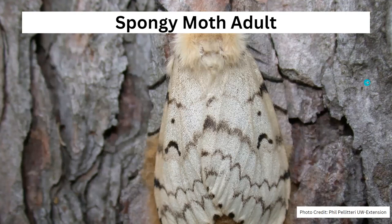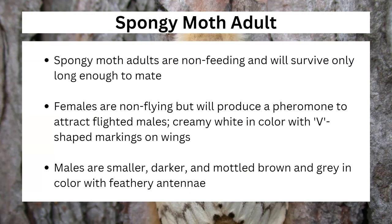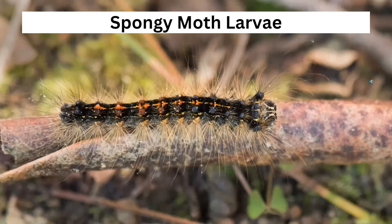What we're looking at now is a Spongy Moth adult. This can be a fairly drab moth, though the female you're looking at does have some markings that set it apart from other insects. The females and males are going to be sexually dimorphic — different sizes and different colors. Females are going to be larger, about an inch and a half, and they're going to have those creamy pale wings with a v-shaped mark on them. Males are going to be smaller, darker with more mottled brown and gray, and they're going to have very feathery antennae that will stand out to you as a feature. And again, the adults are non-feeding — they can't do any damage to any plants. They're only going to survive long enough to find a mate and reproduce.